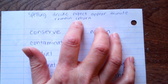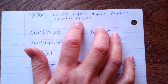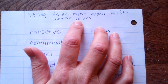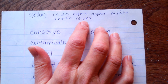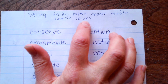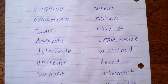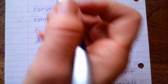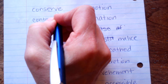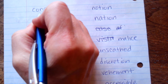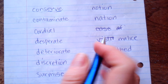This one is U-R makes 'er', E-R makes 'er', and I-R makes 'er'. So return is a U-R word, like the word 'turn'. This one is E-R makes 'er', V-E makes 'v' — conserve.